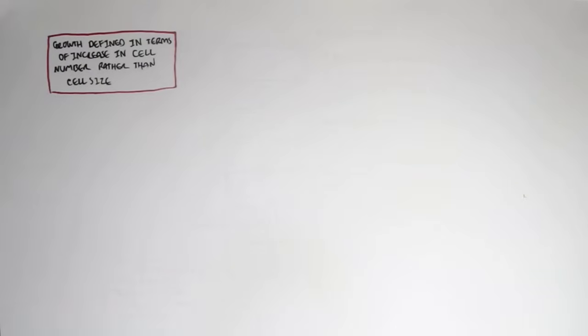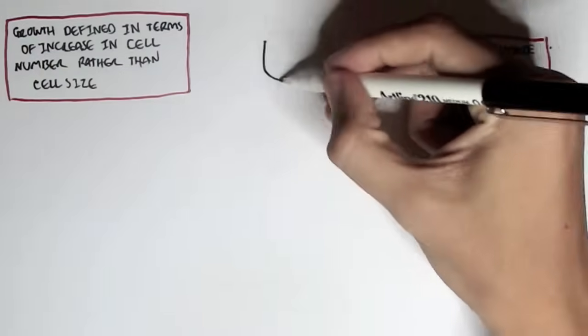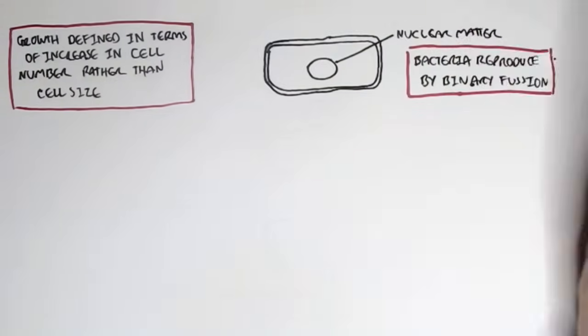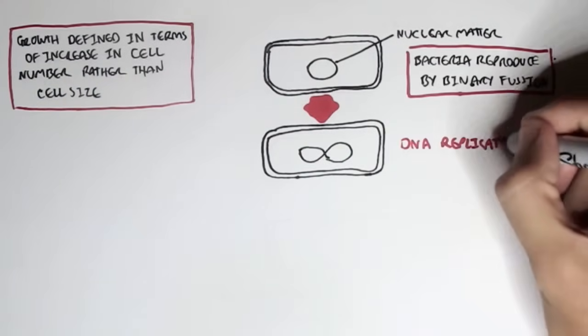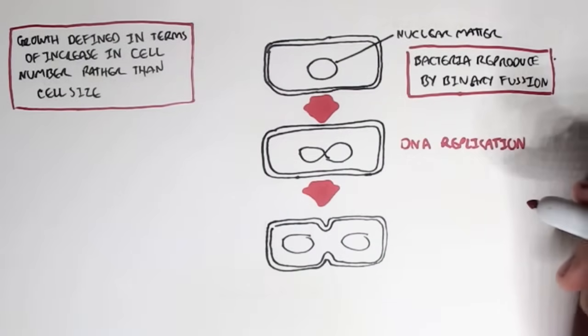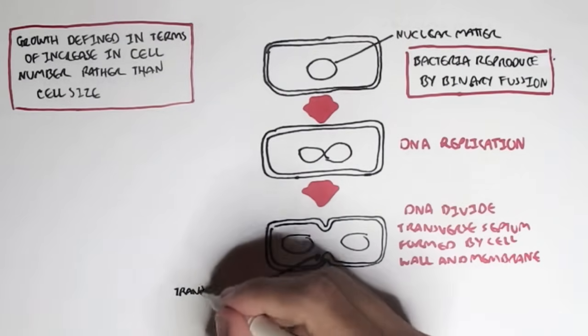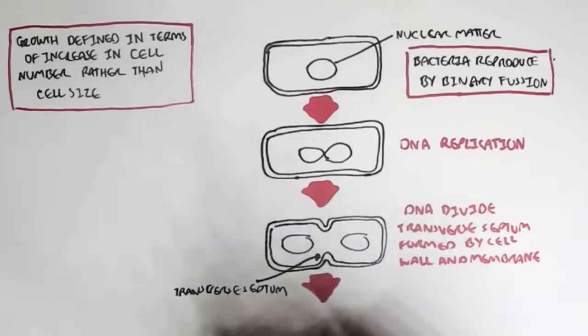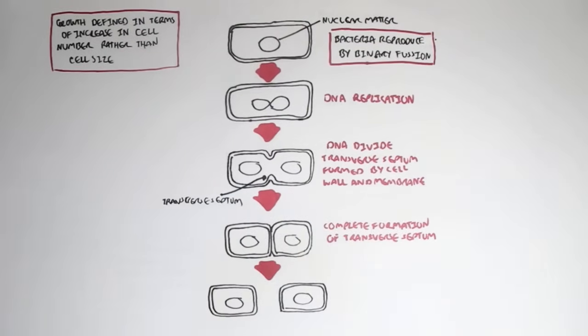How bacteria replicate is not through mitosis and meiosis, but through a process known as binary fission. So here we have a simple bacteria with the DNA inside, circular DNA, nuclear matter. Next, the DNA will be replicated during binary fission. And then the DNA will divide, and what's called a transverse septum will be formed by the cell wall and membrane, sort of like a dent. And then after some time, the transverse septum will be completely formed, which will enable the daughter cells to separate. So now we have two bacteria cells. That completes binary fission, how bacteria reproduces itself.